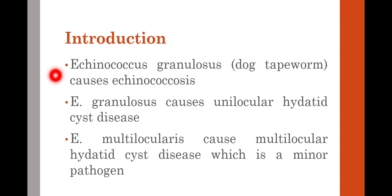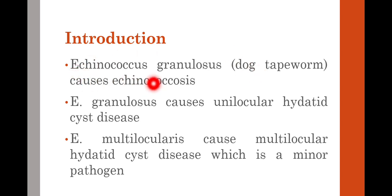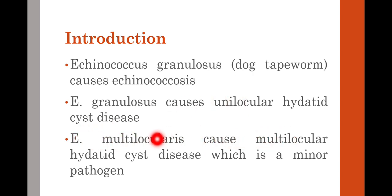The two important species of Echinococcus are Echinococcus granulosis and Echinococcus multilocularis. Echinococcus granulosis is commonly known as dog tapeworm because the dog plays an important role in its life cycle. The disease caused by Echinococcus granulosis is known as echinococcosis or hydatid cyst disease. E. granulosis causes a unilocular hydatid cyst, composed of one compartment, while E. multilocularis causes a multilocular hydatid cyst composed of many compartments.